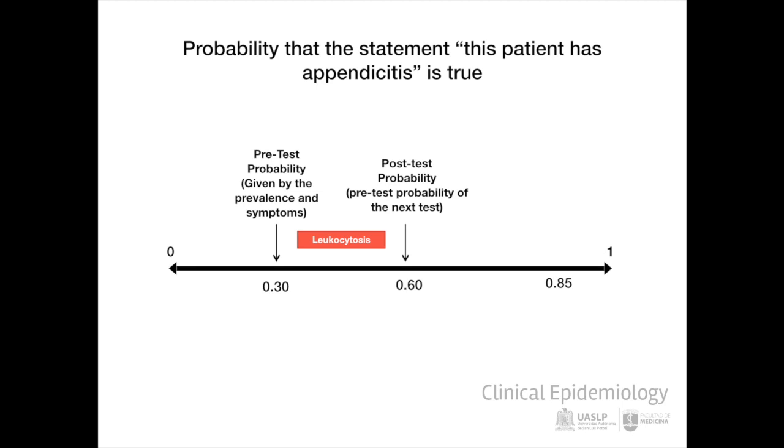However, it may not be enough to decide to perform a surgical procedure. At this point, the clinician has a high suspicion of a diagnosis of appendicitis, but needs a test to confirm it. A test that further increases the pre-test probability.